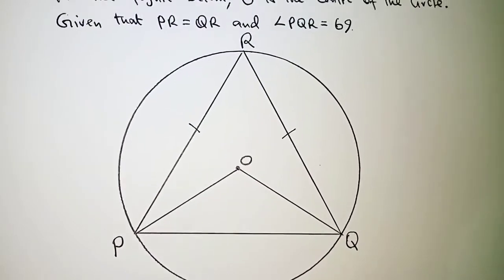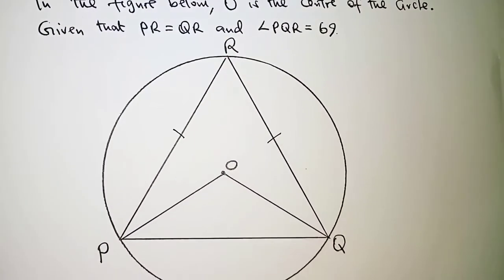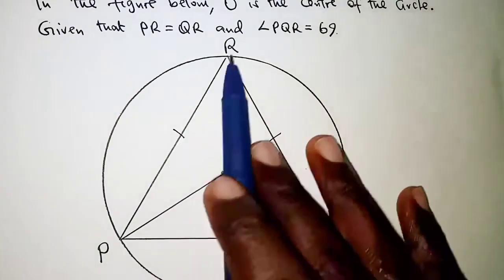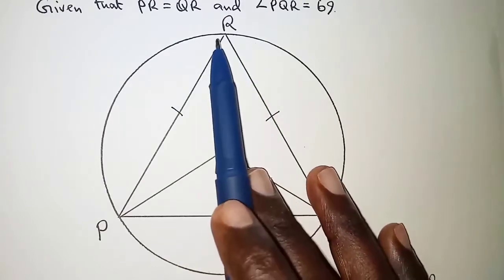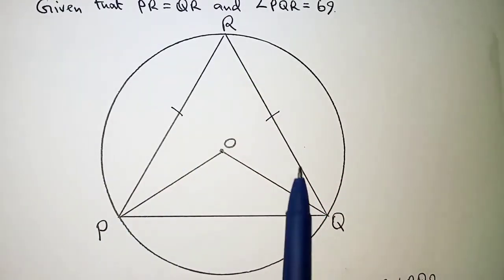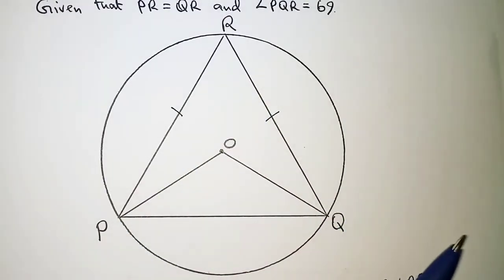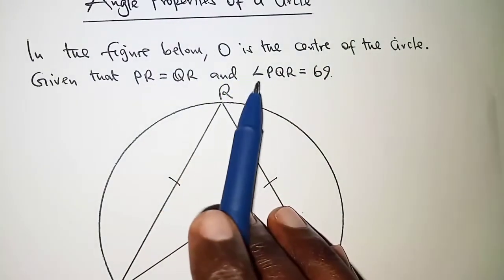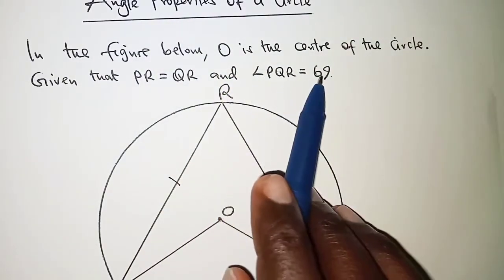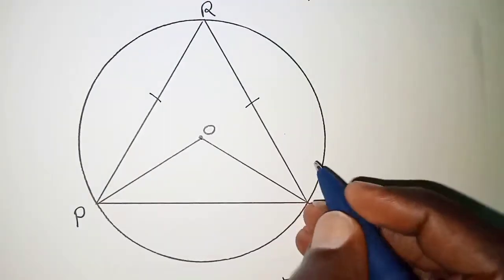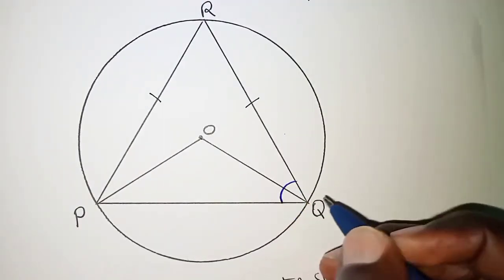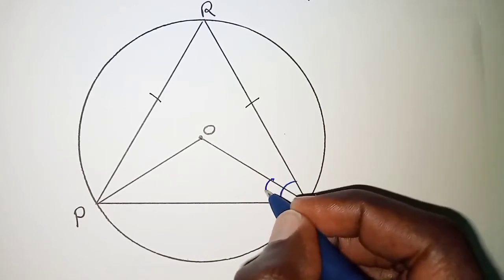In the question, we are told that QR is equal to PR, and that therefore means triangle RPQ is an isosceles triangle. Another thing we are told is that angle PQR is 69 degrees. So we have PQR—the whole of this angle here is 69.